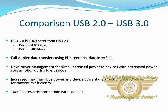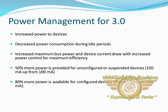USB 3.0 is 100% backward compatible with USB 2.0. For power management, USB 3.0 increases power to devices, decreases power consumption, and increases maximum bus power. 50% more power is provided for unconfigured or unsupported devices.